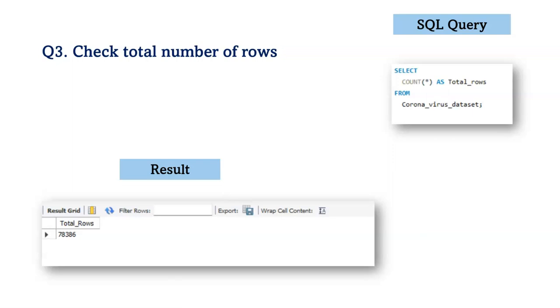Next, we have to check the total number of rows in the dataset. Based on the analysis, the total number of rows in the table are 78,386.